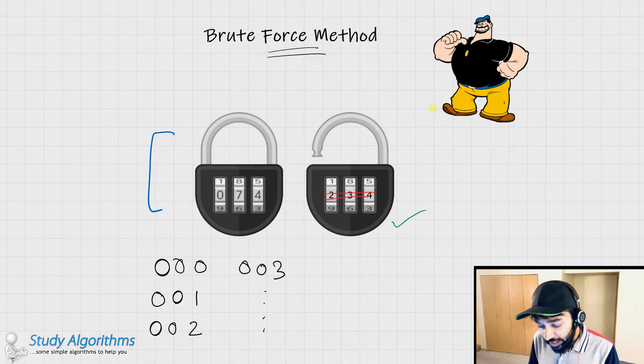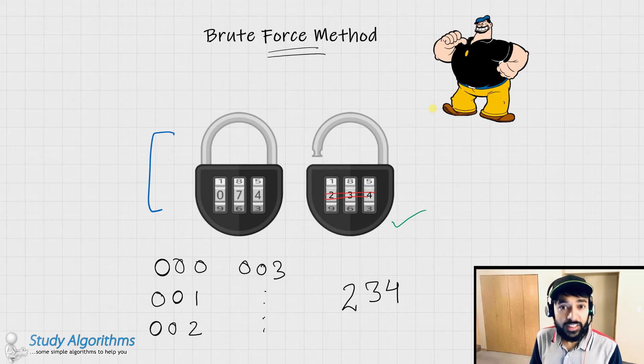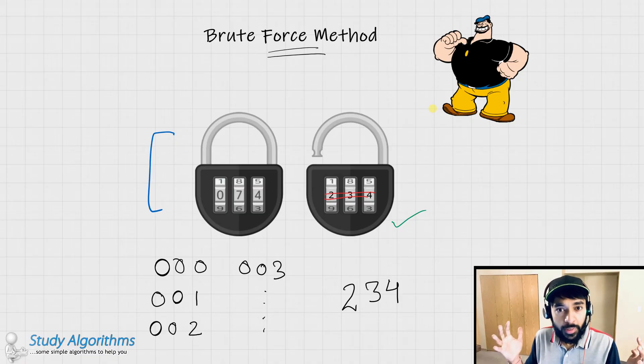You get the idea. And eventually, what would happen is, you would land upon the code 2, 3, 4, and this padlock would open. So what did you just do? You just exhausted all of your possibilities to open the padlock. And this exactly is a brute force method.